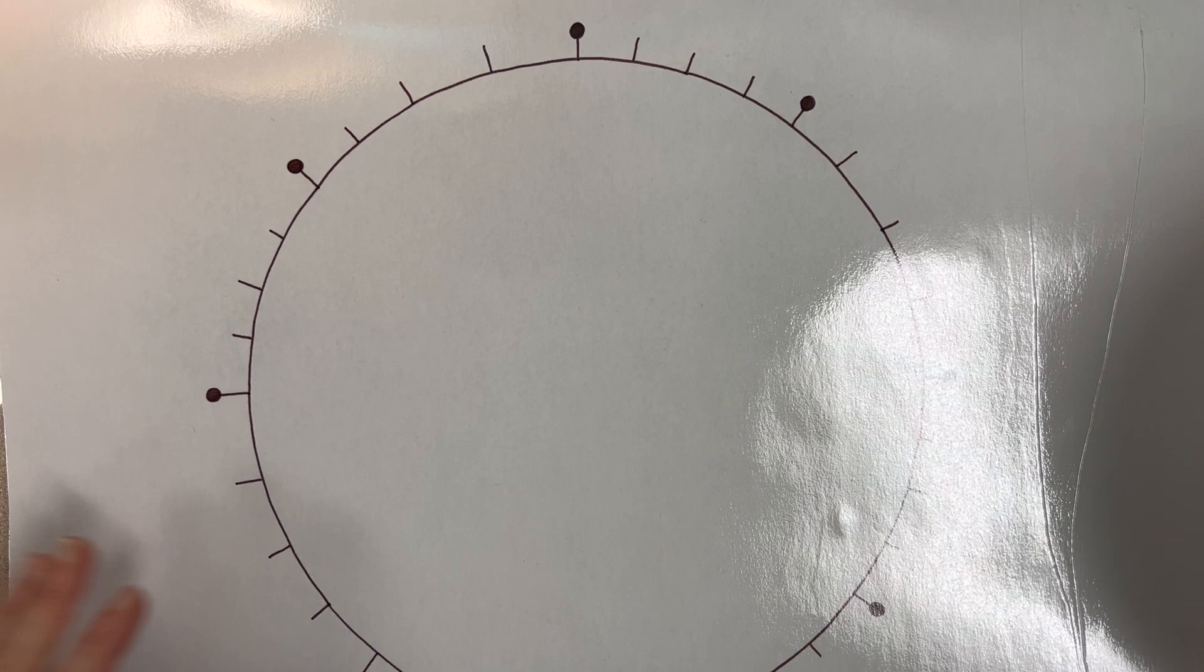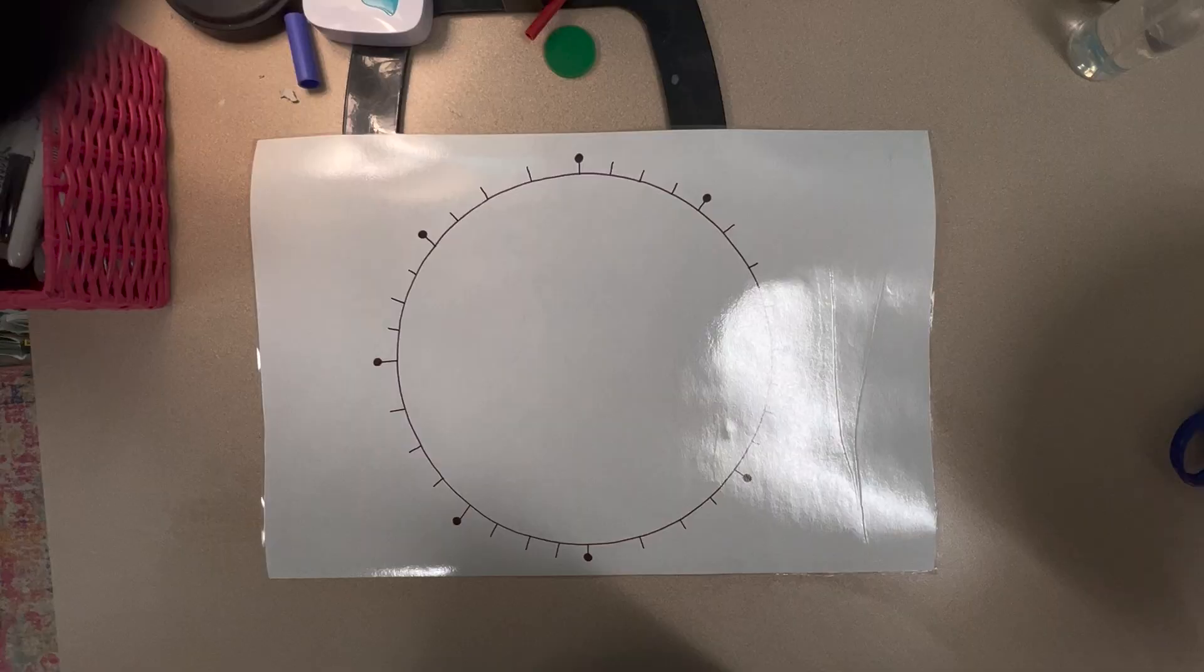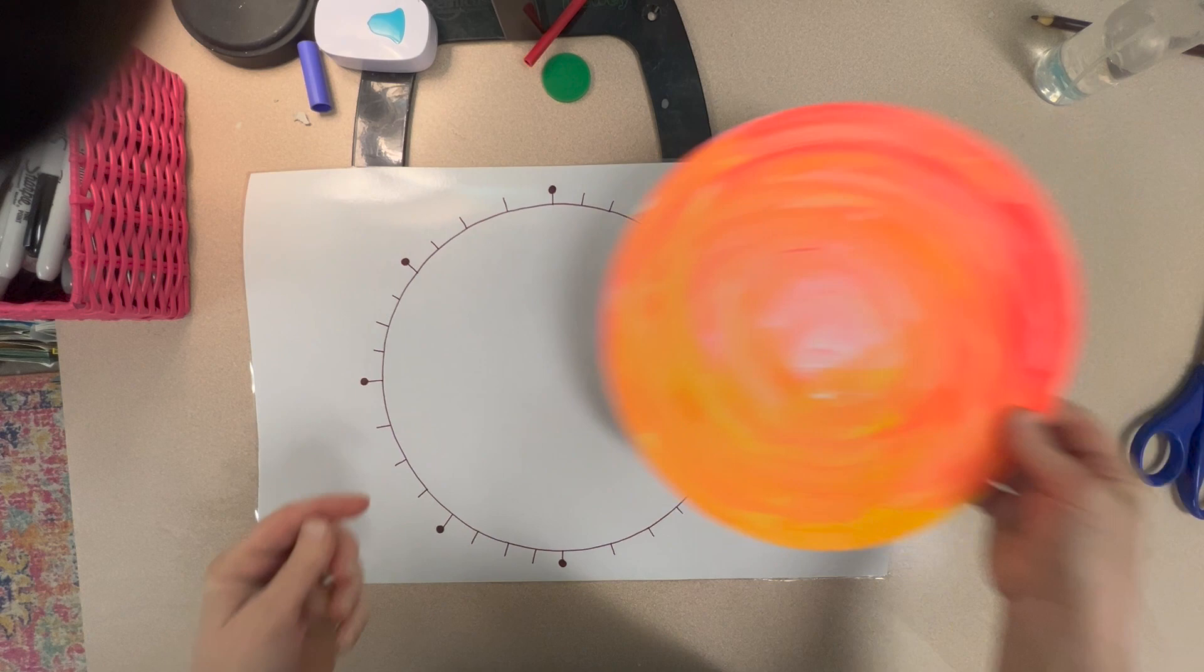When your round cardboard is painted and dry, you are going to lay it on top of this template that I made for you guys. You want to lay it paint side down.